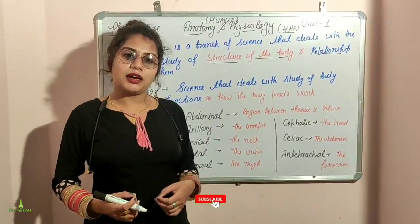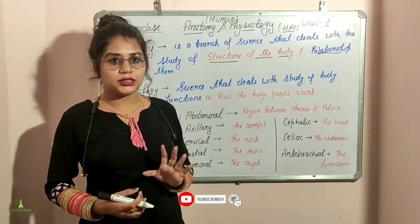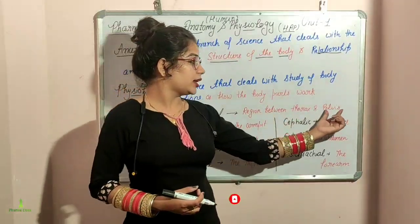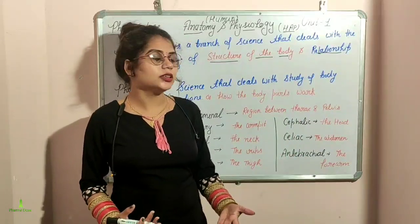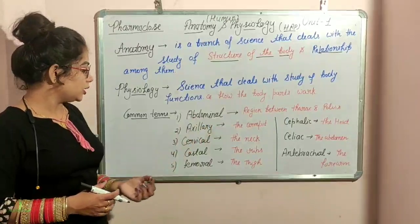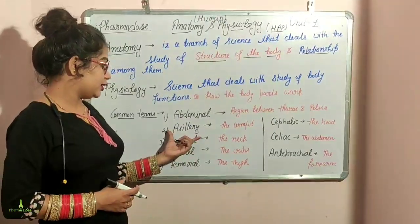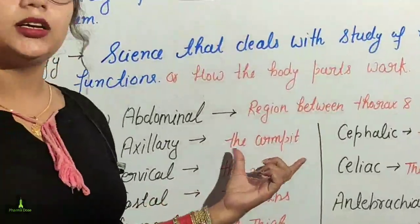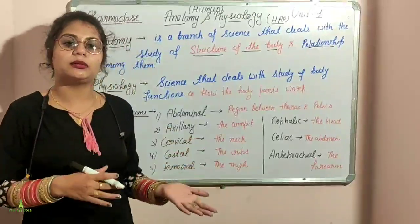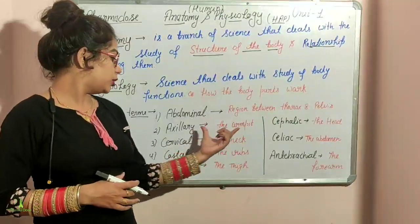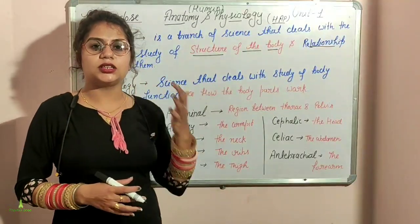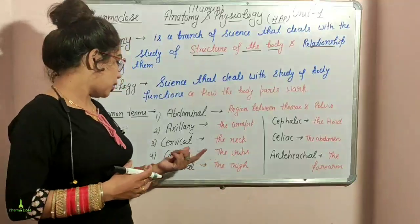We have seen an abdominal cavity where we have intraperitoneal injection using an experimental animal. Next is axillary — the axillary region is the armpit, which is the shoulder joint area. We call it the axillary region, and this will become clearer when we study the skeletal system.